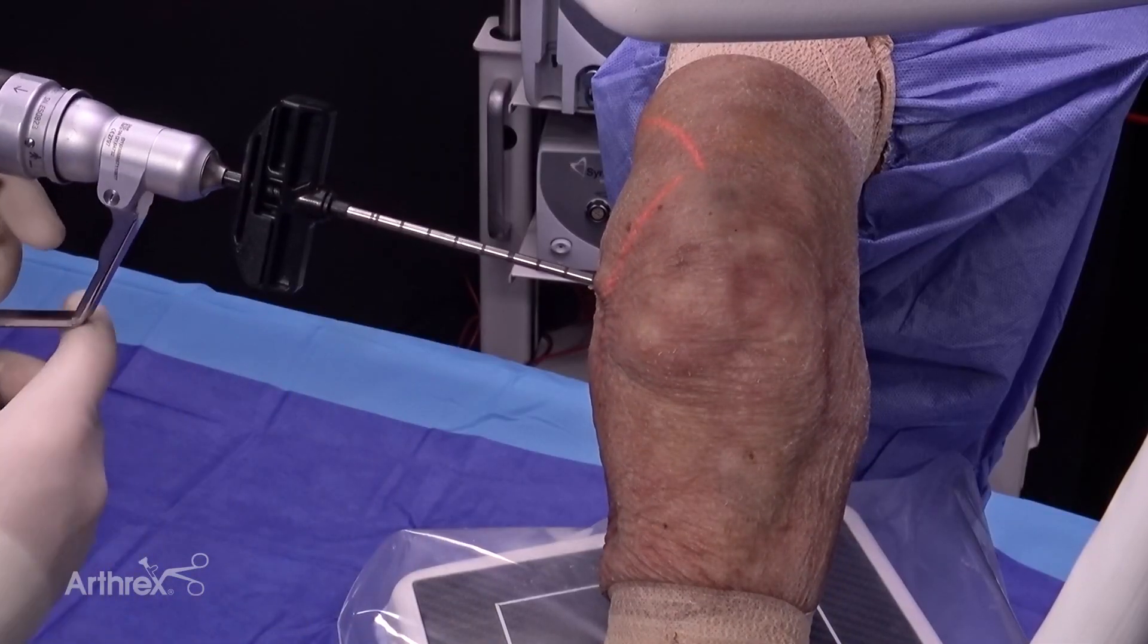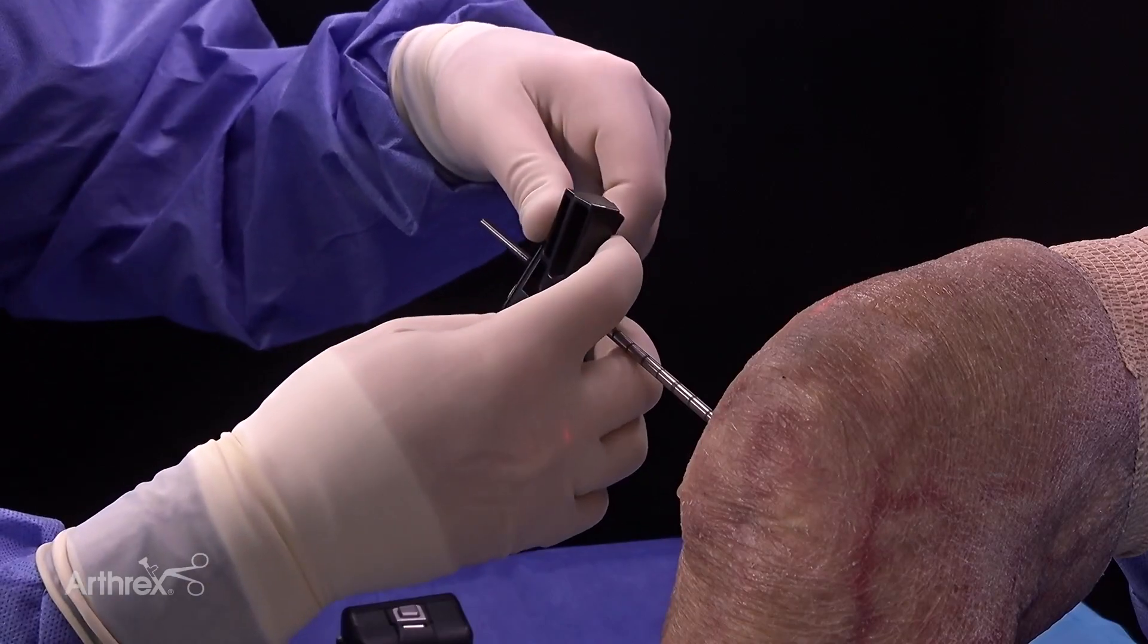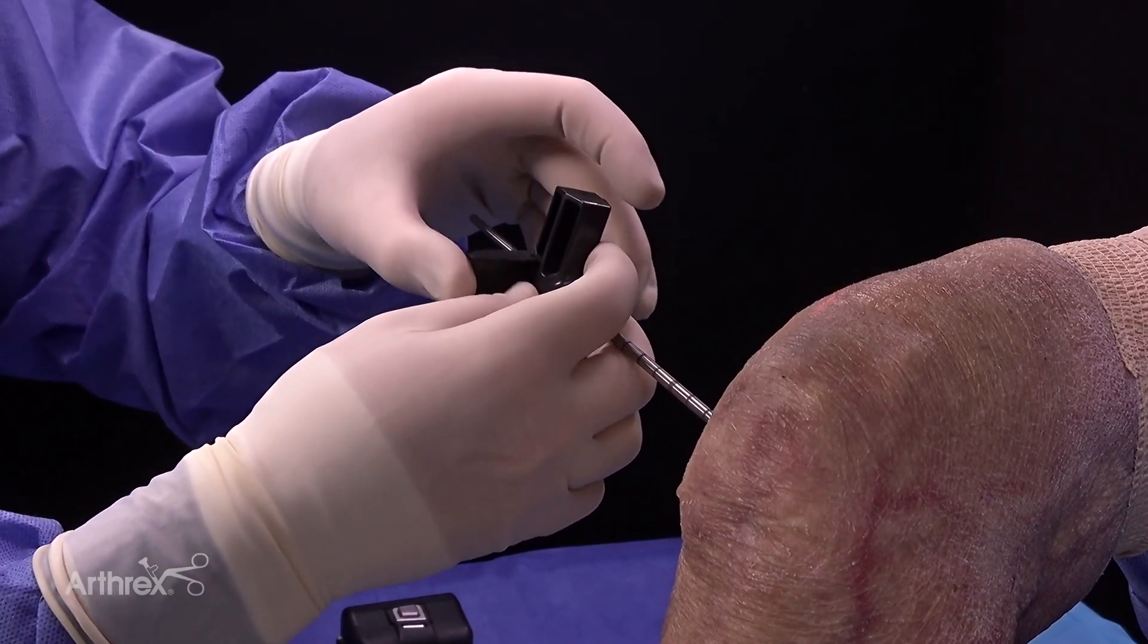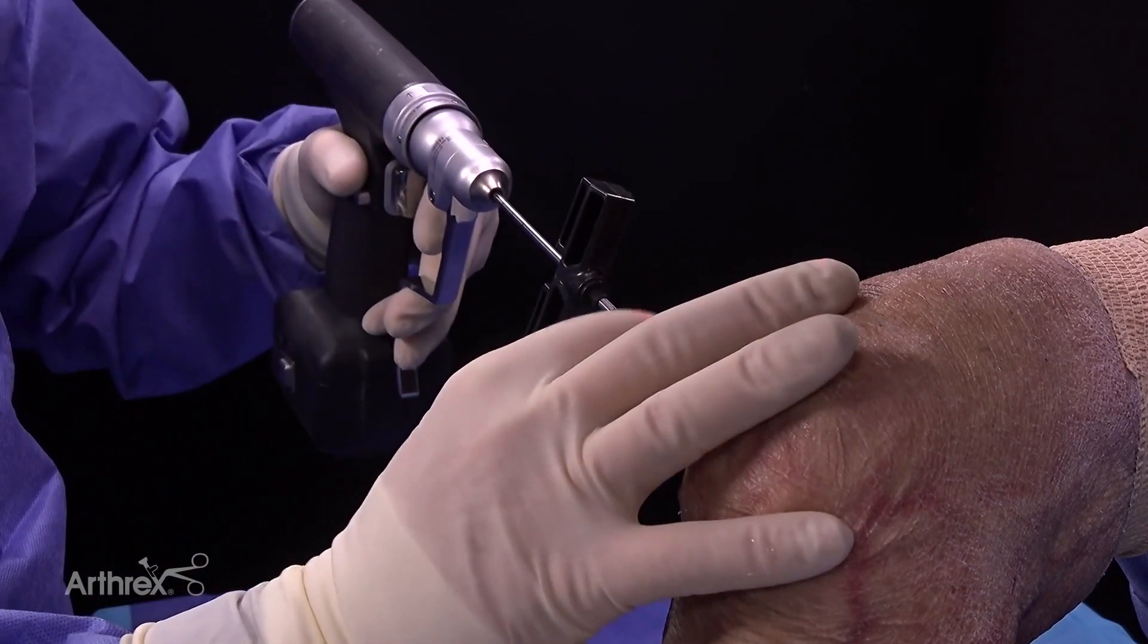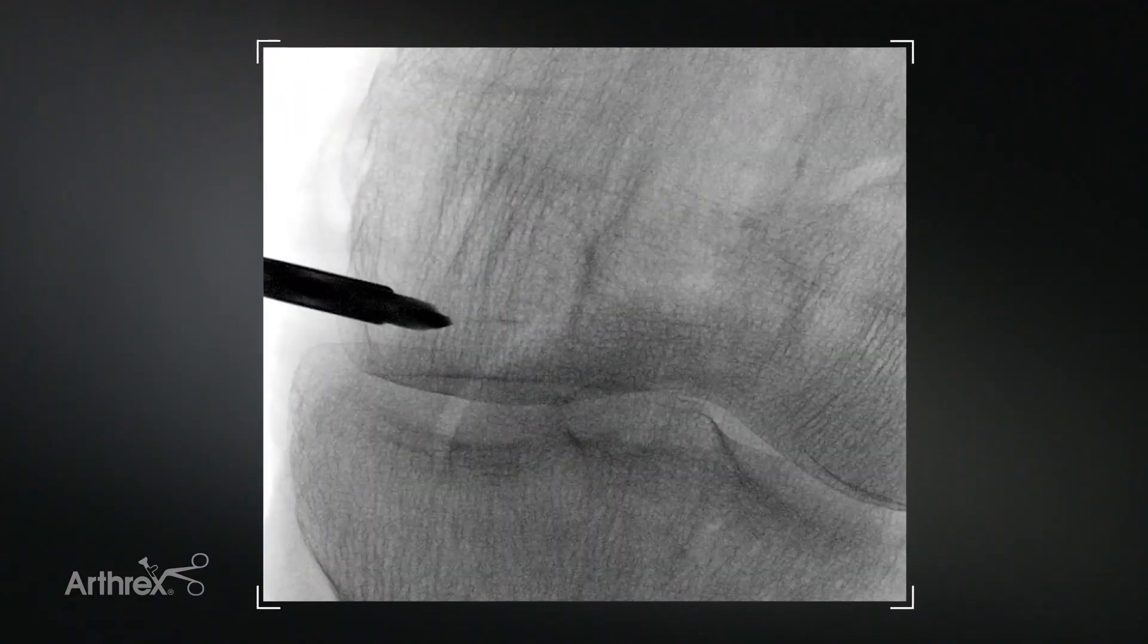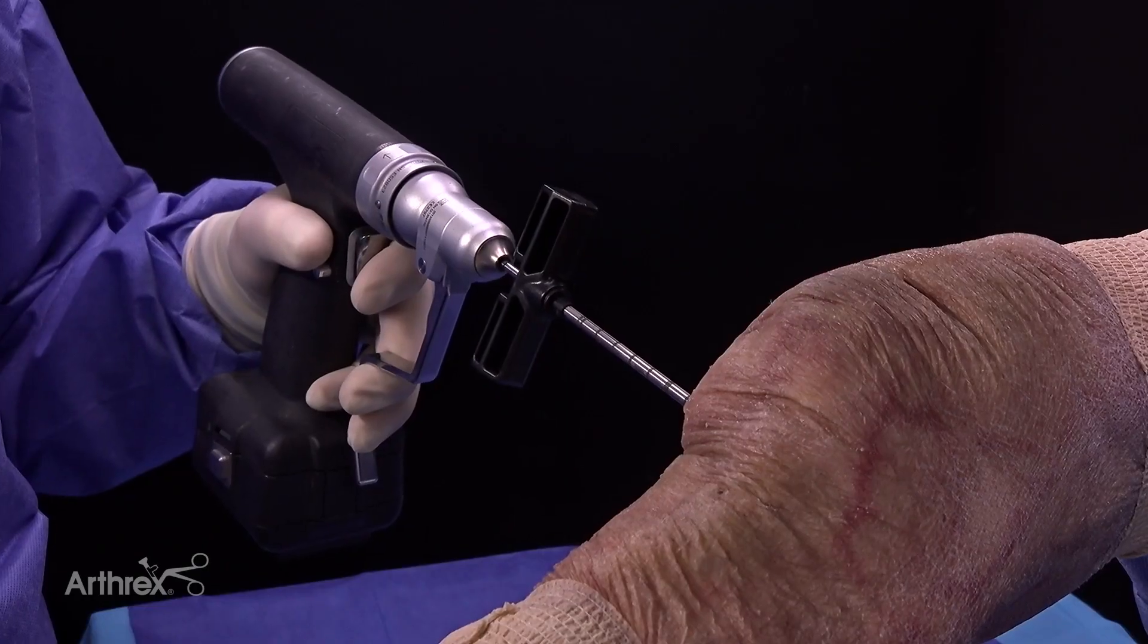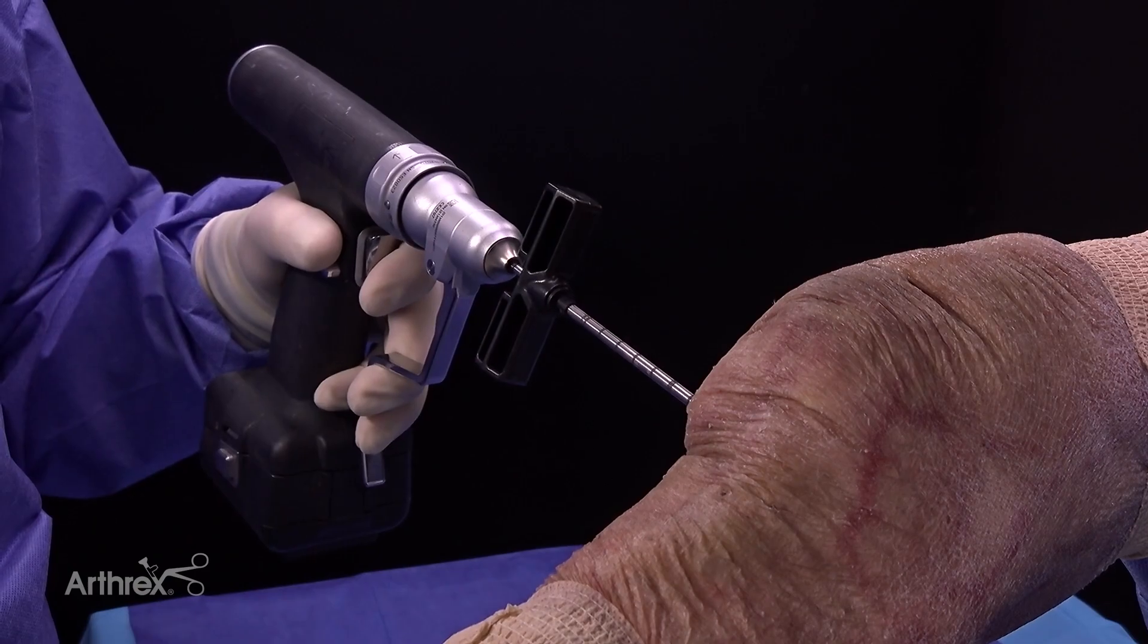So now we can take this off and pull that out. This comes out just like that. Then we can introduce our guide pin and we can place that under fluoroscopic guidance. You can do some mild adjustments here, but we like how this looks on this AP so we can start advancing that across.